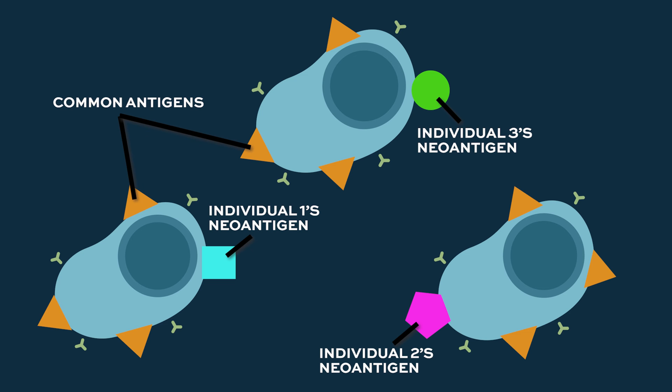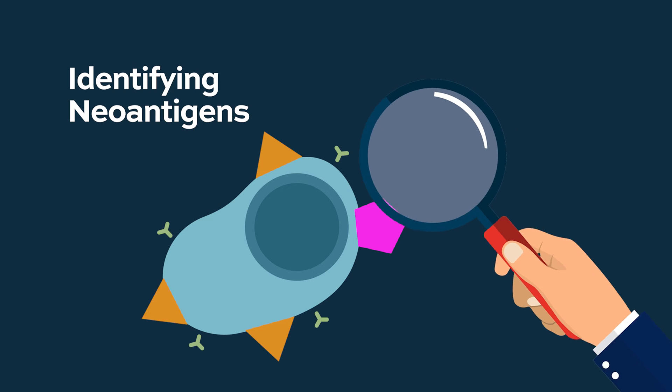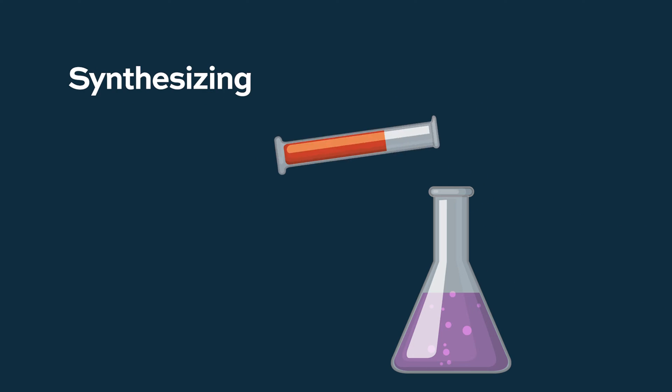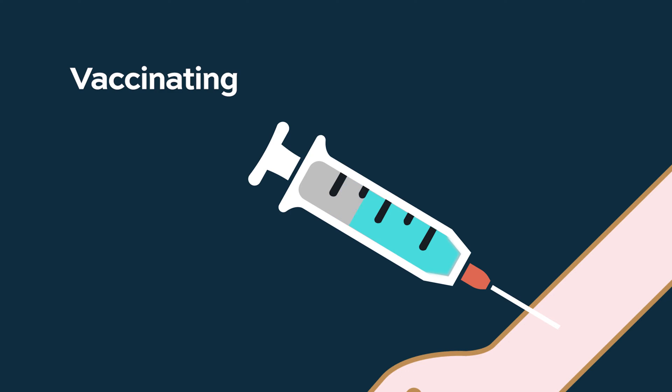Those neoantigens are antigens that are probably much more likely to generate an immune response if we can actually identify them and vaccinate for them. There have been examples in melanoma as well as glioblastoma, the brain tumors, where studies have been done identifying, synthesizing, and then vaccinating against these neoantigens. It's been shown that as we generate these responses, we can get much more potent anti-tumor immunity. The problem is that doing this is very labor-intensive, and obviously every individual has a different neoantigen, so you can't just make a pool of these things and use them as a vaccination.